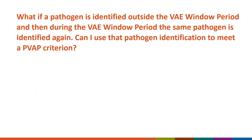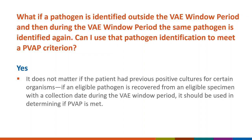What if a pathogen is identified outside the VAE window period, and then later during the window period the same pathogen is identified again? Can that pathogen be used to meet PVAP criteria? The answer is yes. It doesn't matter if a patient has had previous positive cultures — if an eligible pathogen is recovered from an eligible specimen collected during the VAE window period, it should be used for determining if PVAP criteria is met.